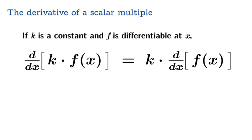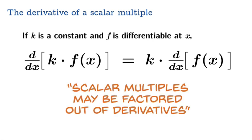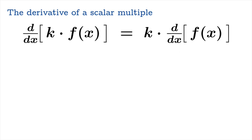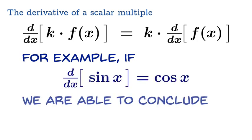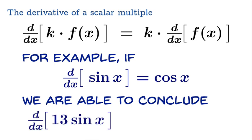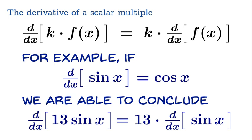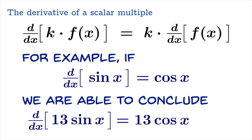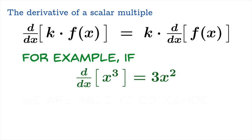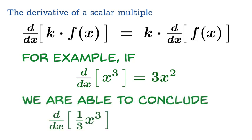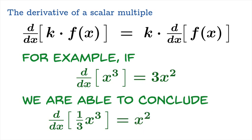There's our first combination law. The motto is: scalar multiples may be factored out of derivatives. For example, if you know the derivative of sin x is cos x, then the derivative of 13 sin x is just 13 cos x — you slide the 13 right out. Another example: if the derivative of x cubed is 3x squared, then the derivative of (1/3)x cubed is (1/3)·3x squared, which quickly reduces to x squared. The scalar multiple rule is very convenient.